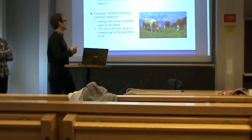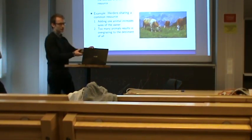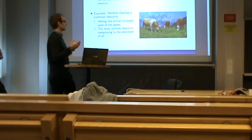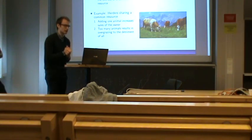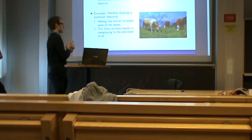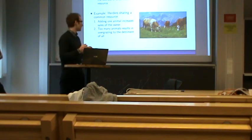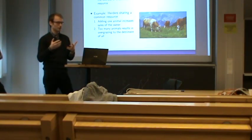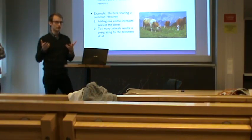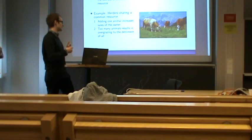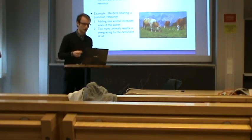William Foster Lloyd was a British writer on economics, and in 1833 he published a paper where he discussed the overuse of common resources. In his example he talked about herders sharing a common resource, which was grass. Adding an animal to this shared field would lead to more profit for the owner, but it could lead to overgrazing and be a detriment to all.